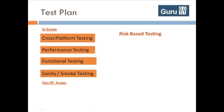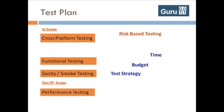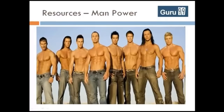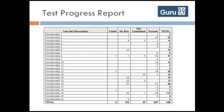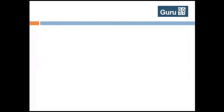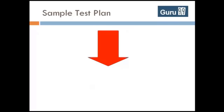If timing considerations do not permit performance testing, it will move from in-scope to out-of-scope. A test plan will also contain information about test estimates, test team, schedule, and so on. A test plan helps monitor the progress of various testing activities and helps take controlling action in case of any deviations from the planned activities. That is a brief overview of how to create a test plan. Below you will find a sample test plan template for your reference.